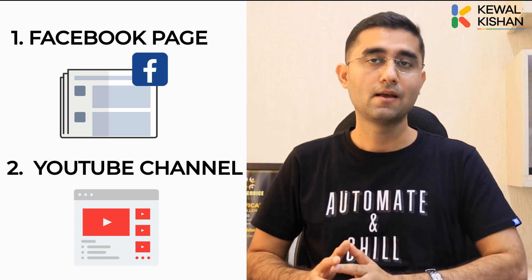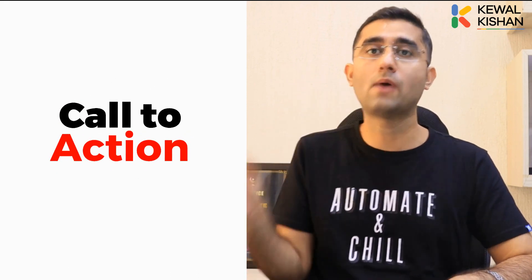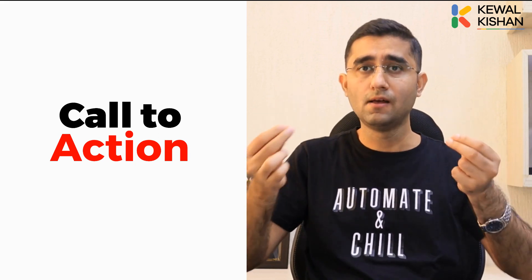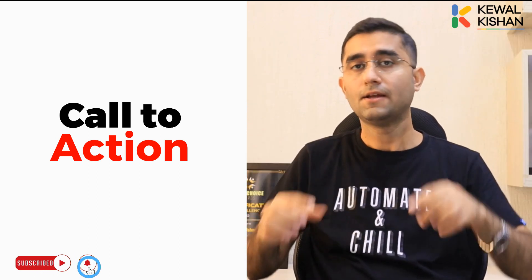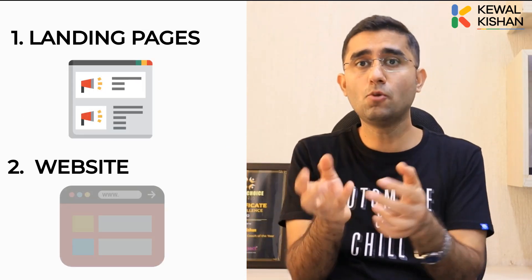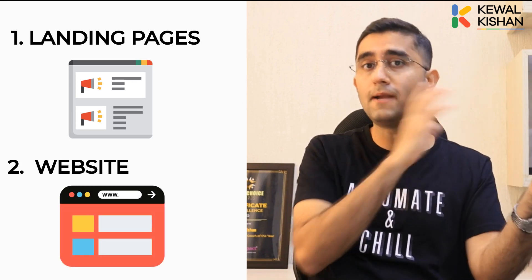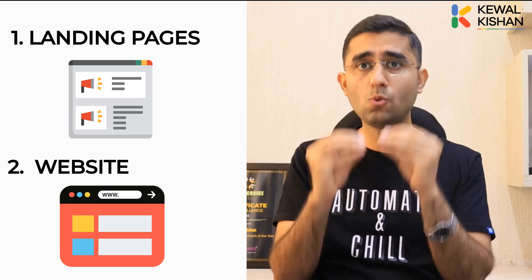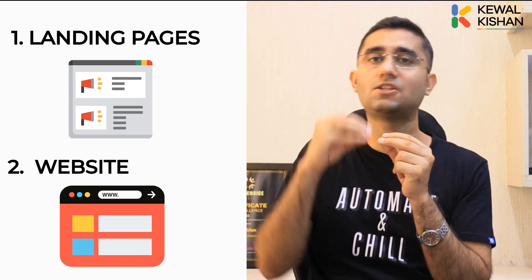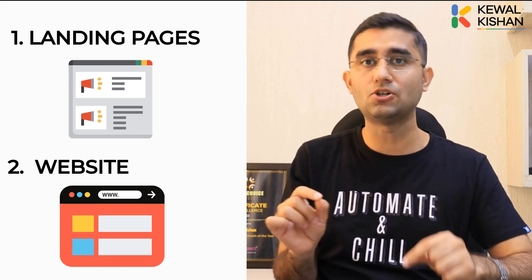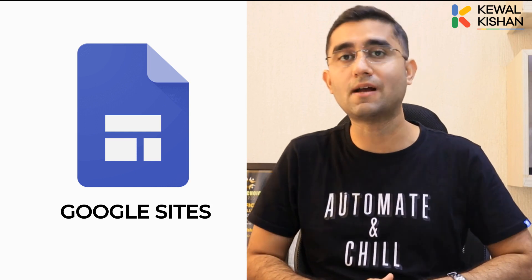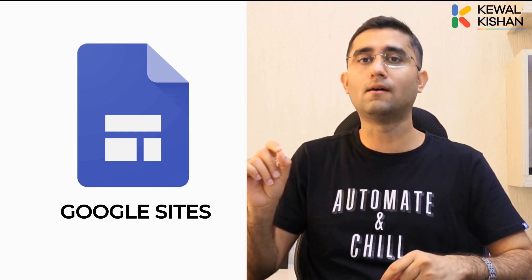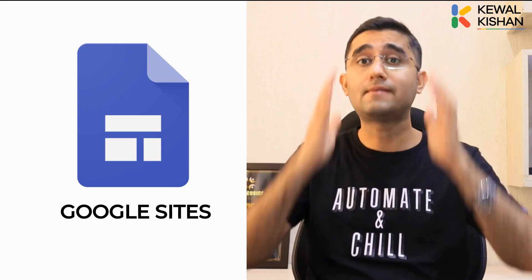The fourth free tool is a call to action (CTA). Whenever you upload anything on social media, people need an option to click a link and reach out to you. The best call to action is a landing page or website. You may have an old website, but don't worry — there is a free tool using which, without depending on a third-party IT agency, you can create a landing page in less than 10 minutes. That tool is called Google Sites. I've added the tutorial link above so you can learn how to create your landing page in under 10 minutes.